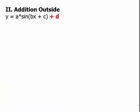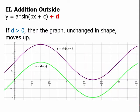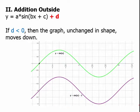If we add on the outside, that just shifts the graph. Adding a positive number moves the graph up unchanged in shape — for example, the graph shifts up one unit while everything horizontally stays in the same place. If we subtract on the outside, the graph moves down, as in y equals sine x minus 2, which shifts the purple graph into the negative region below the x-axis.